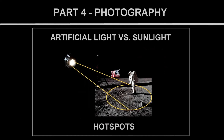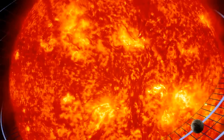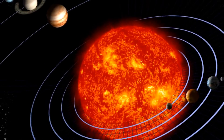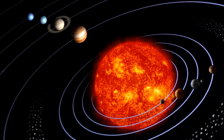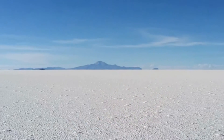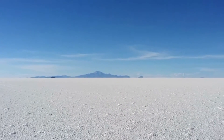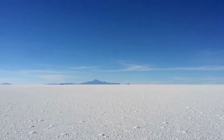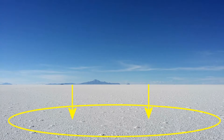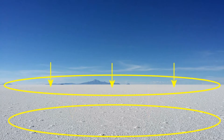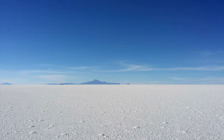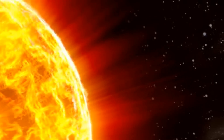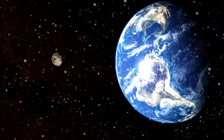The first element suggesting the use of artificial light are the so-called hot spots. The sun is a huge, extremely powerful source of light, capable of illuminating entire planets with its rays. When the sun illuminates a large, flat expanse, the light reaches every visible point with the same intensity. Whether we observe an area closer to us or one in the distance, the luminosity of the ground is practically the same everywhere. This is due to the fact that the sun is thousands of times larger than the Earth, which means it can easily illuminate any portion of its surface with the same intensity.